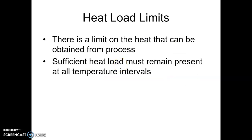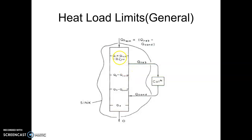The other aspect is the heat load. There is a limit on the heat that can be obtained from the process. When energy is passed from one temperature interval to another, it cannot go negative — there must always be a sufficient load at every interval. It should not be so low that the temperature difference between the two intervals becomes very small or requires a very high heat transfer area. So sufficient heat load must remain present at all temperature intervals, meaning Q reboiler and Q condenser should not be such that any of these values goes below zero. Q2 and Q condenser should have a sufficient difference — you cannot expect a very high amount of energy from the process leading to negative energy transfer.